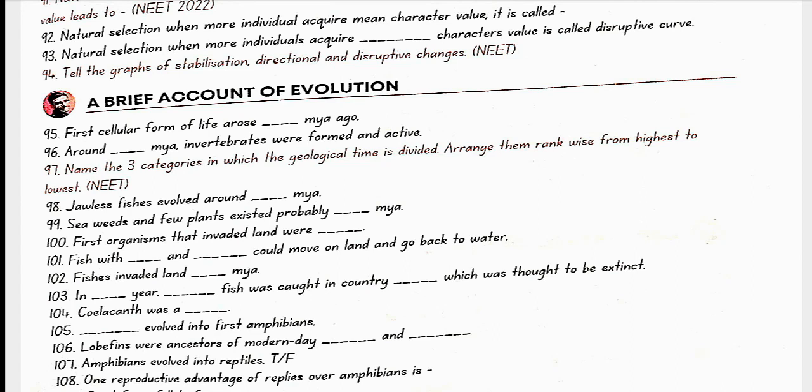A brief account of evolution. First cellular form of life arose 2000 million years ago. Around 500 million years ago, invertebrates were formed and active. Name the three categories in which the geological time is divided: Era, then period, and then epoch. This is out of NCERT. Jawless fishes evolved around 350 million years ago. Seaweeds and few plants existed probably 320 million years ago. First organism that invaded land were plants. Fish with stout and strong fins could move on land and go back to water. Fish invaded land 350 million years ago.